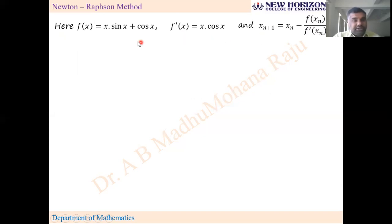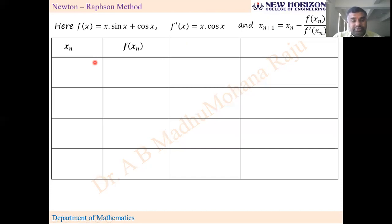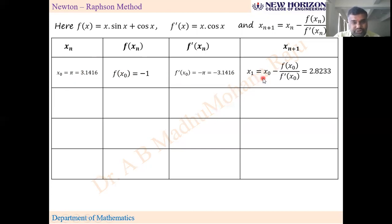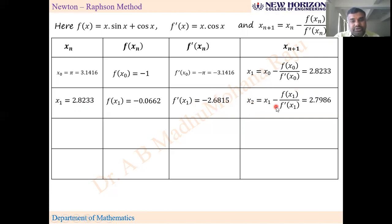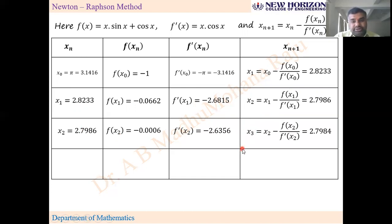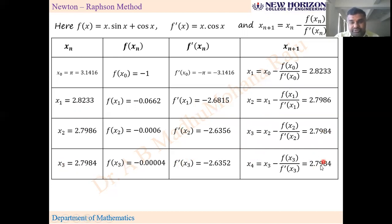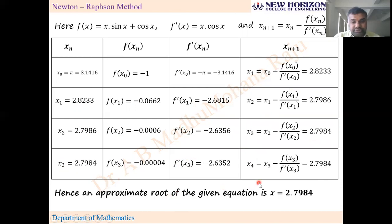The table has columns: xₙ, f(xₙ), f'(xₙ), and xₙ₊₁. Take x₀ = π (or 3.1416). Compute f(x₀), f'(x₀), and get x₁. Then use x₁ to get x₂, x₂ to get x₃, x₃ to get x₄. Observing that x₃ = x₄ = 2.7984, the iteration stops. Hence the approximate root of the given equation is x = 2.7984.